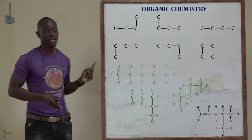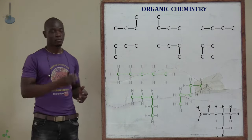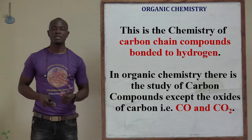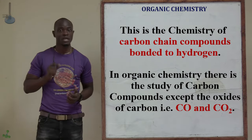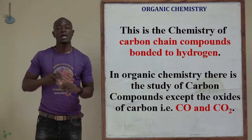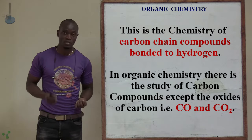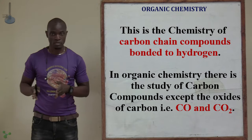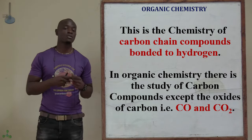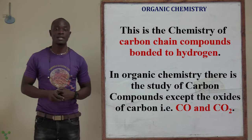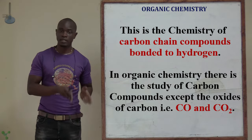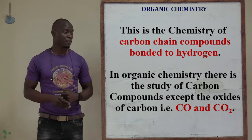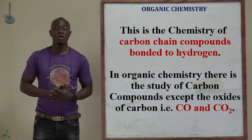So if you have a carbon chain compound bonded to hydrogen, that forms the basis of organic chemistry. In organic chemistry there is mainly the study of carbon compounds, except the oxides of carbon, which mainly include carbon dioxide and carbon monoxide. So in organic chemistry we study the carbon chain except the carbon oxide compounds. Basically, organic chemistry is the study of carbon chain compounds bonded to hydrogen as well as other atoms, but not carbon oxygen compounds comprising carbon dioxide and carbon monoxide.